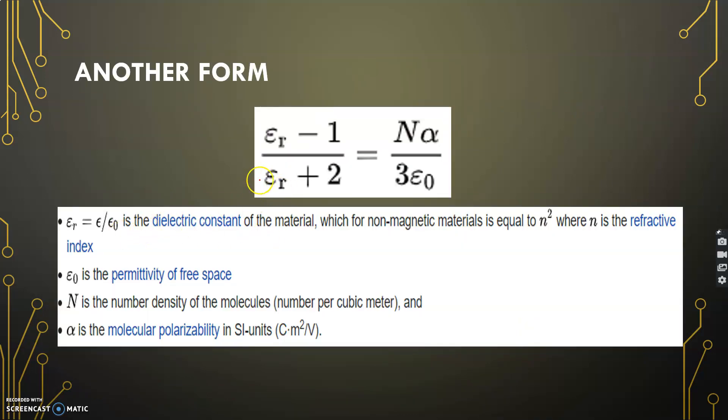This is another form of the same equation, where epsilon r is epsilon by epsilon naught, which is the dielectric constant of the material. Epsilon r minus 1 by epsilon r plus 2 equals N alpha divided by 3 epsilon naught, where epsilon naught is the permittivity of free space.